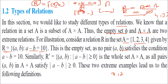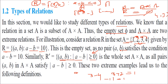Take another relationship for the same set A: R' = {(a, b) : |a − b| ≥ 0}. Take any element — say 3 minus 2 gives 1, which is ≥ 0. Even 3 minus 4 gives −1, and the modulus of −1 is 1, which is again ≥ 0. So all pairs will satisfy this condition, meaning all pairs of A cross A satisfy this. These are two extremes — one with no relationship, and one where everyone is related.